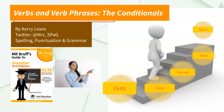Verbs, mostly doing words, or verb phrases — mostly two or more verbs together — give us a lot of information about possibilities. I like to imagine conditional sentences as steps. At the bottom are things that are certain to happen, and then as we climb the steps, things become less and less probable. In this video, I'm going to focus on why we use particular conditional sentences.